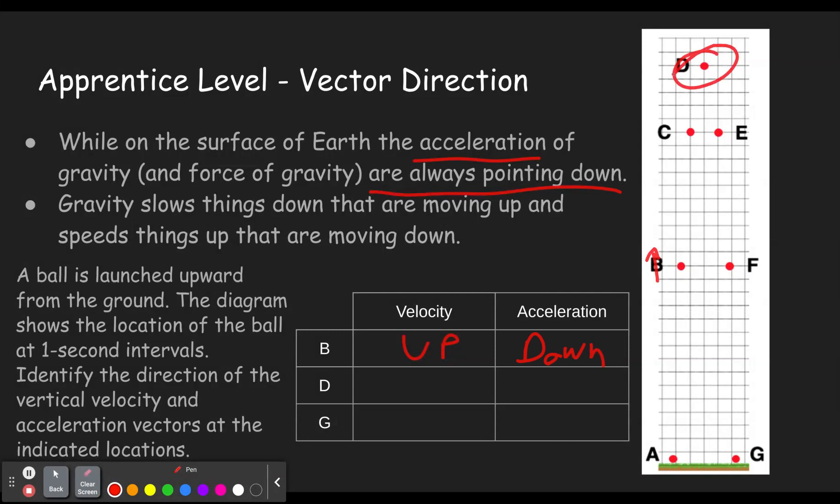D is at the top. At that instant that it's at the top, not even for a millisecond, but at that instant, it is not moving up or down. So at the top, it's always zero. The acceleration is, as always, down.